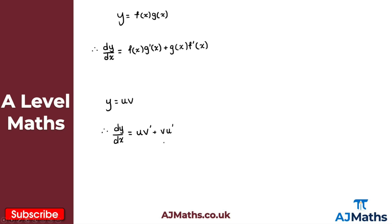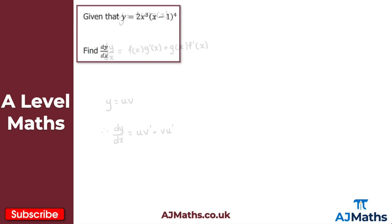So what we're going to do now is take a look at the first question. We've been given that y equals 2x cubed multiplied by (x minus 1) to the power of 4, and we're asked to find dy/dx. I need to define my two functions: u and v. I'll say u is 2x cubed, and v will be (x minus 1) to the power of 4.